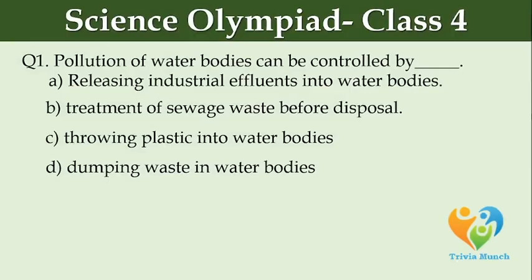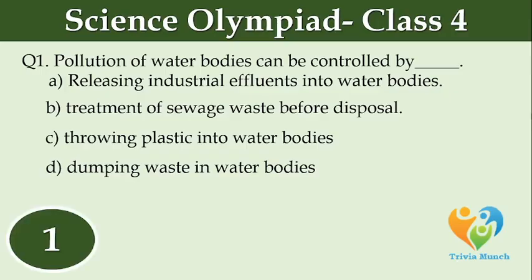Pollution of water bodies can be controlled by dash. Option A: Releasing industrial effluence into water bodies. Option B: Treatment of sewage water before disposal. Option C: Throwing plastic into water bodies. Option D: Dumping waste in water bodies.